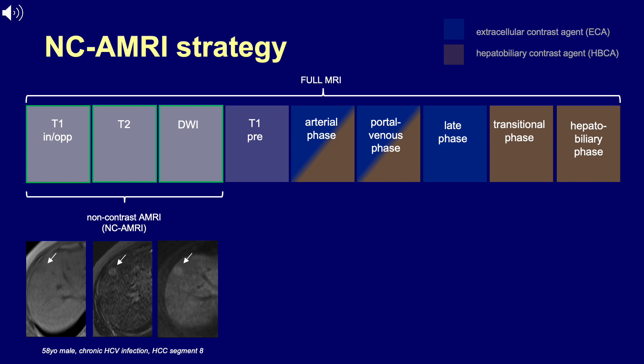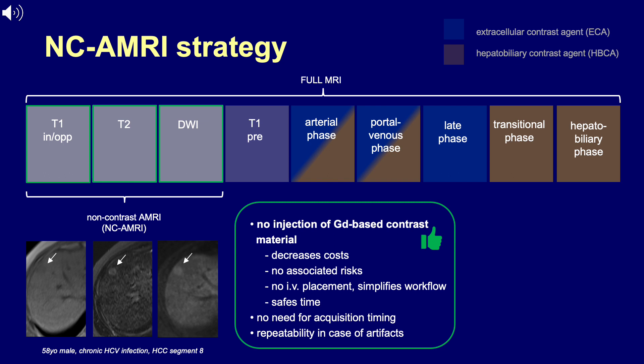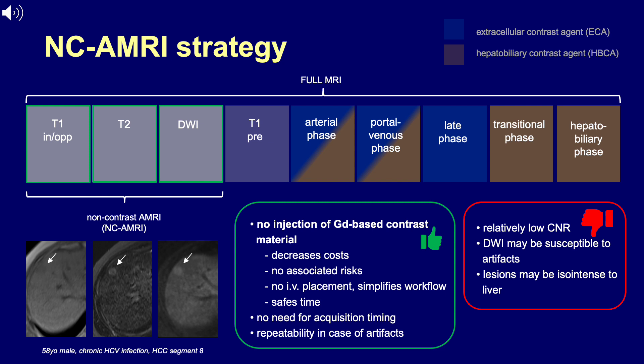The first and most straightforward approach is the so-called non-contrast AMRI strategy. Up to three sequences are acquired, including a T1-weighted sequence with or without in and opposed phase imaging, a T2-weighted sequence, followed by diffusion-weighted imaging. Major advantages relate to the omission of a gadolinium-based contrast agent, no need for acquisition timing, and sequences may be repeated easily in case of artifacts. On the downside, interpretation relies solely on unenhanced images with relatively low CNR. Diffusion-weighted imaging can be technically challenging, and lesions may be iso-intense to the liver or obscured and difficult to visualize.